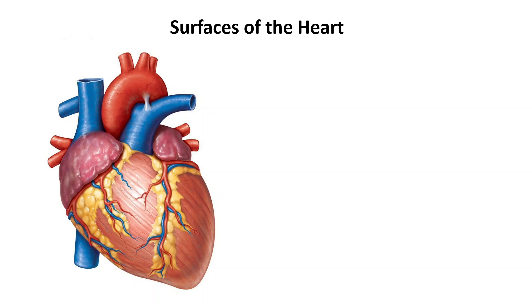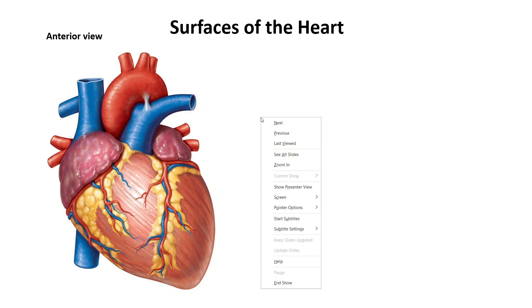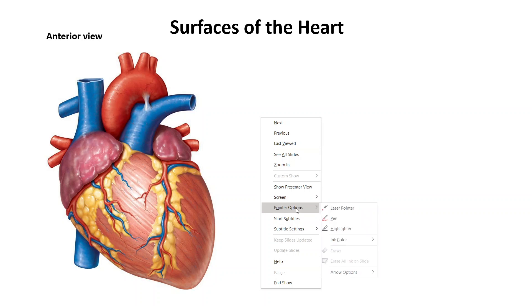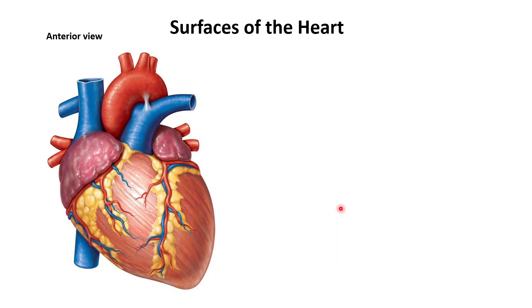So right now we can see the heart in an anterior view, meaning that the patient is standing in front of us and we're looking at their chest and we can see their heart. So let's just quickly label a few parts of the heart. Let me get my handy-dandy pointer out.